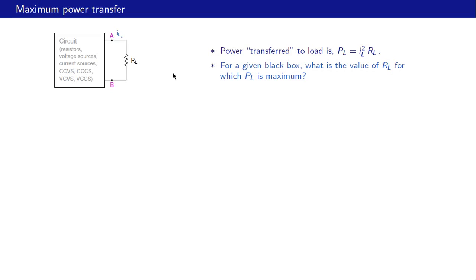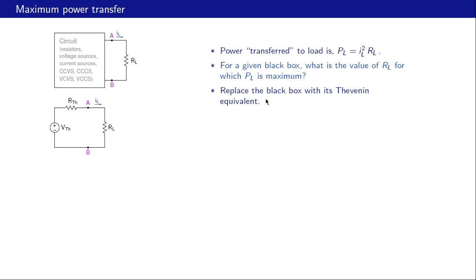There is a transfer of power from the circuit to the load resistance, and the question we ask is: for a given circuit or black box, what is the value of RL for which PL is maximum? To answer that question, let us replace the original circuit with its Thevenin equivalent. We get a simple circuit where IL is Vth divided by (Rth plus RL), and PL is IL squared times RL, giving us this expression.